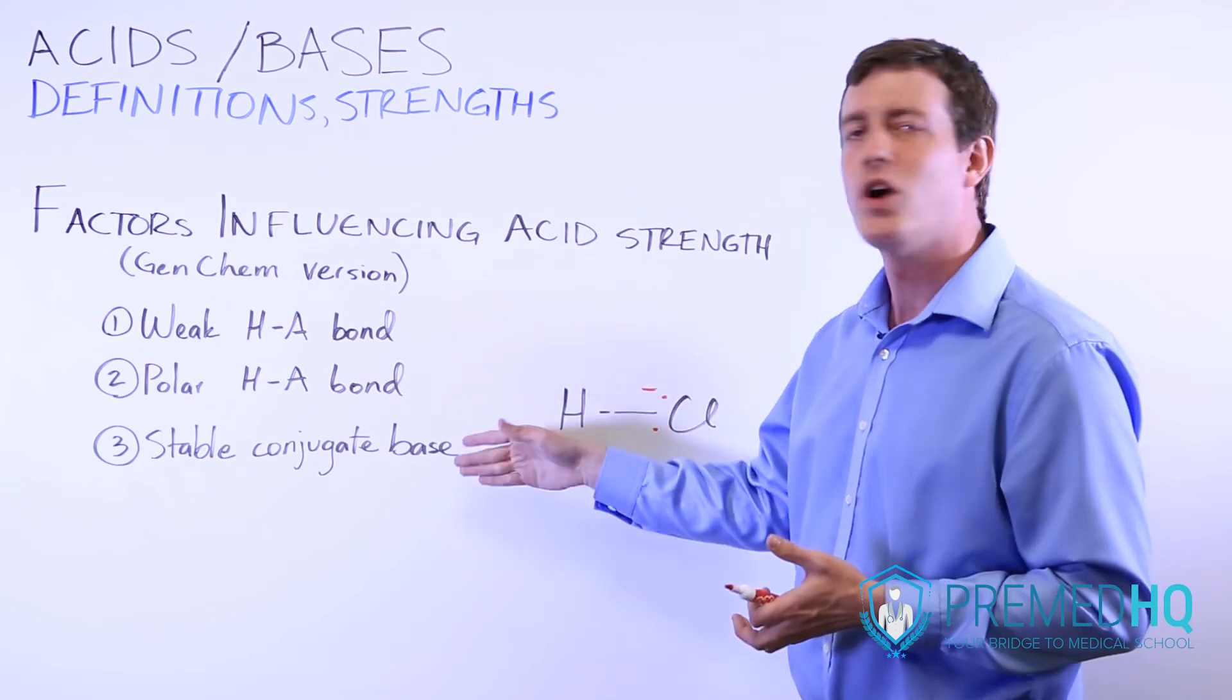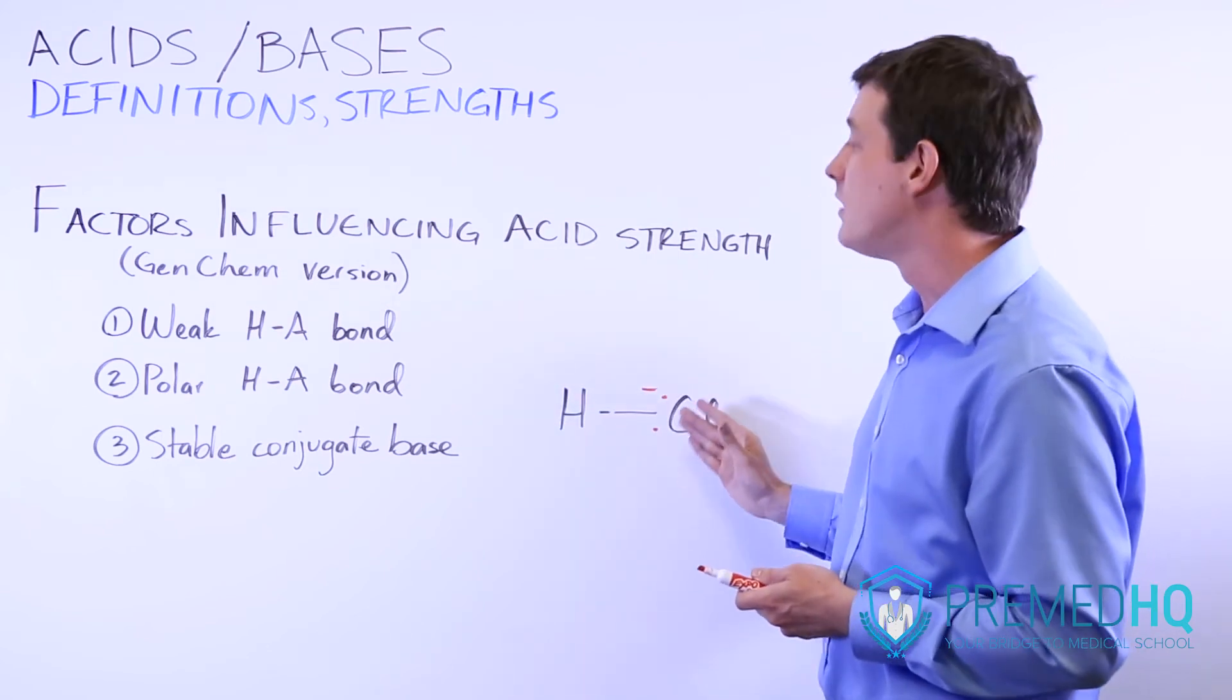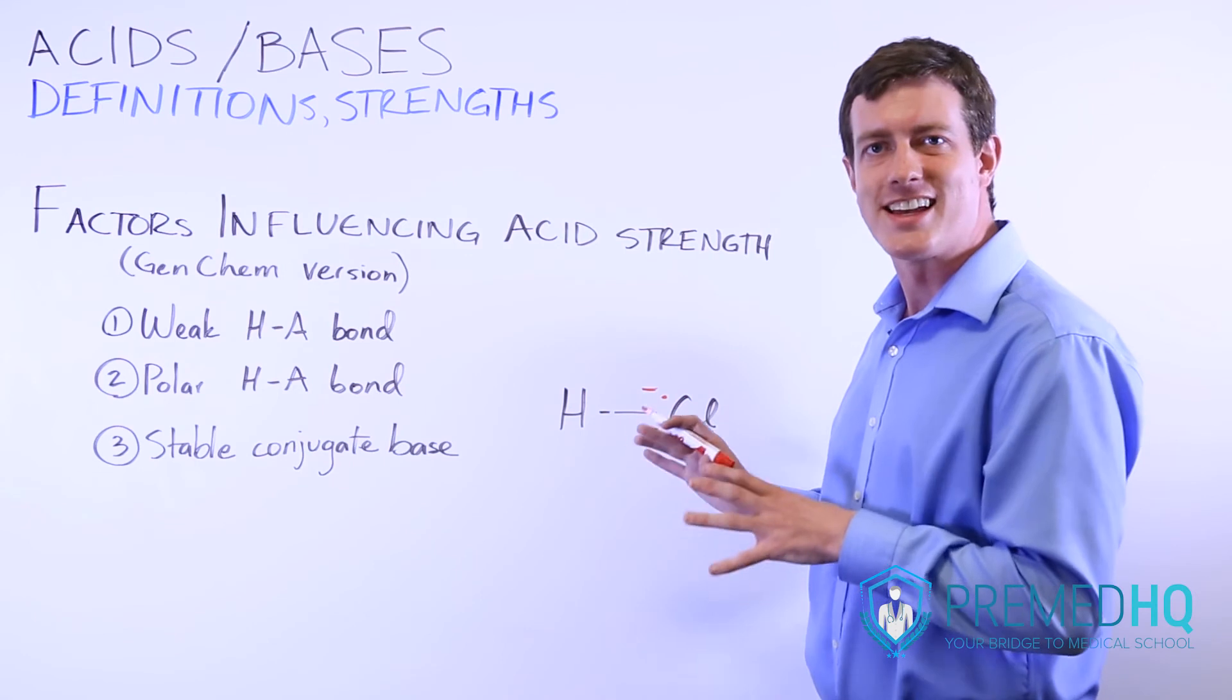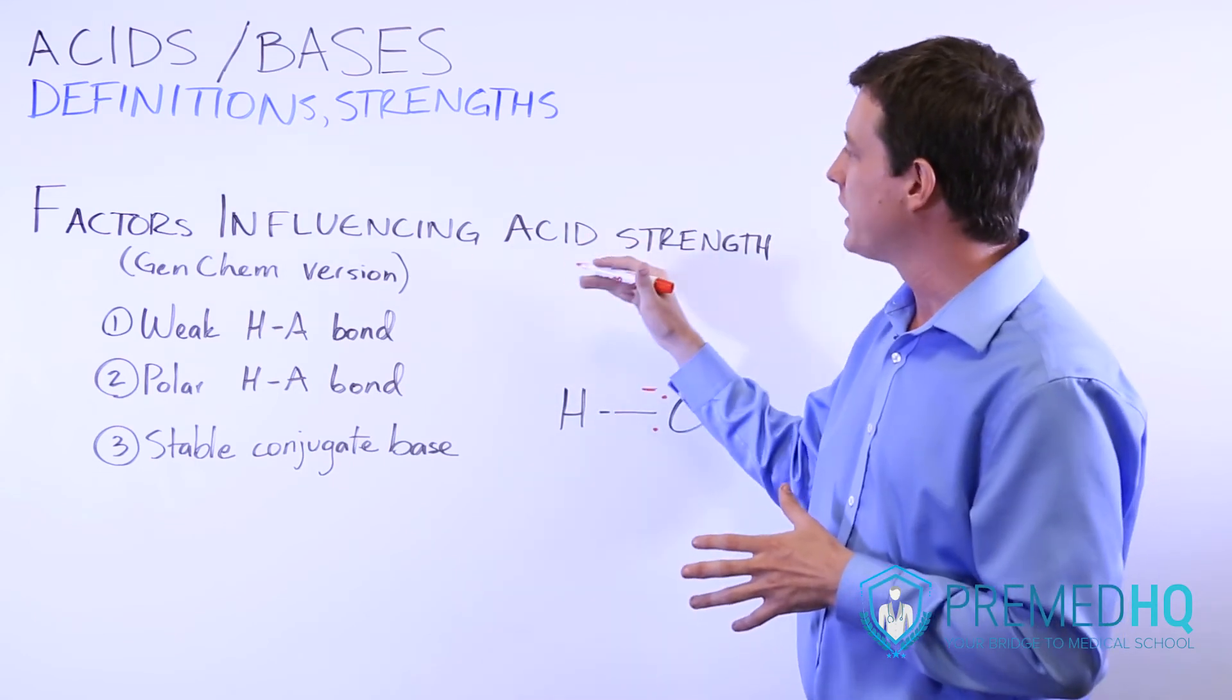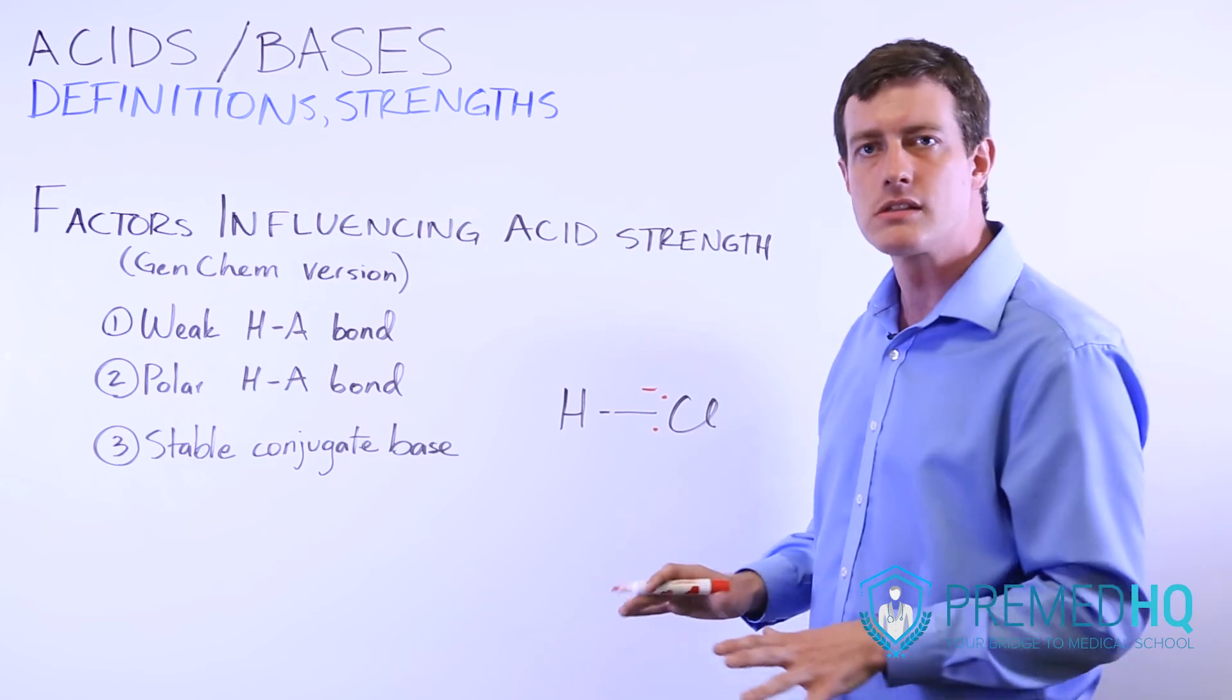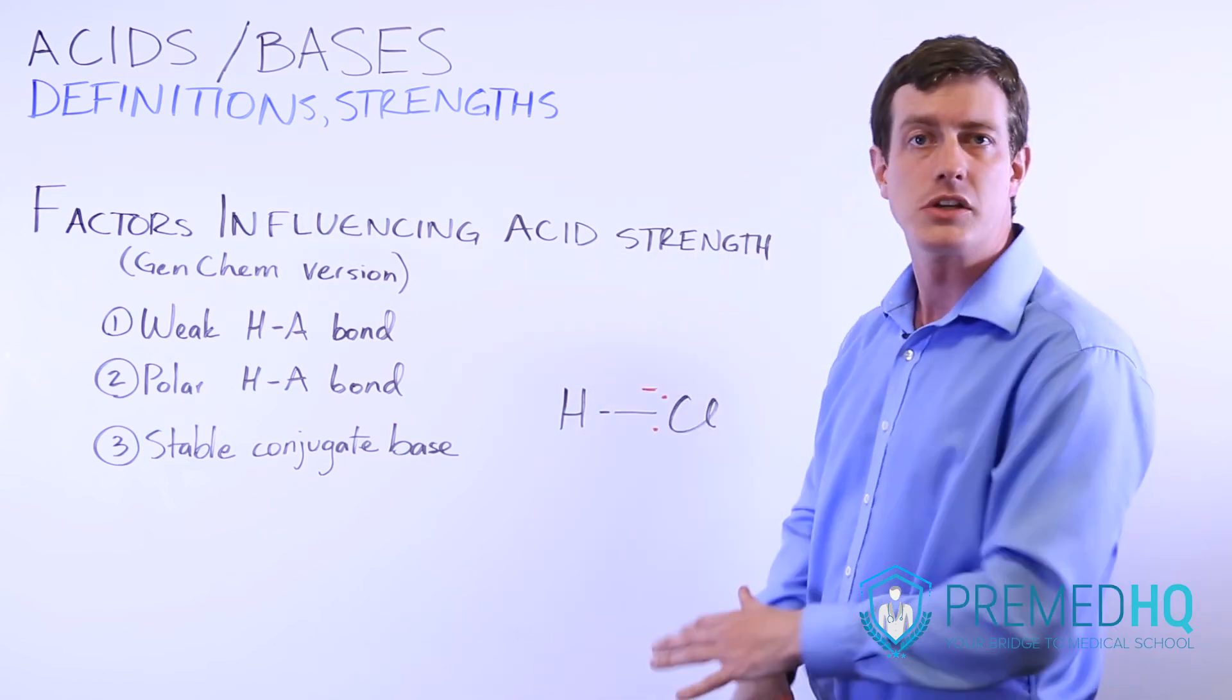This can be seen in something like HCl, but you also may see stability evidenced by resonance structures and things like that also. These are different ways to evaluate the strength of an acid in general chemistry. And now we'll go into the list of strong acids and strong bases, which is one you should have committed to memory by the time you're tackling these questions on the MCAT.